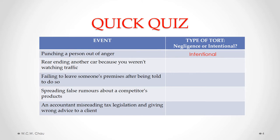The second event is rear-ending another car because you weren't watching traffic. You caused the rear-ending accidentally — it was caused by your carelessness. So that is considered to be a negligence tort.